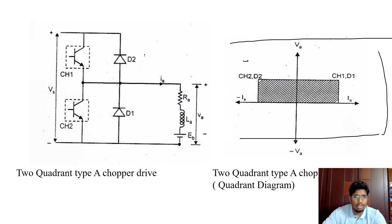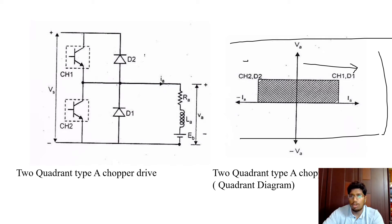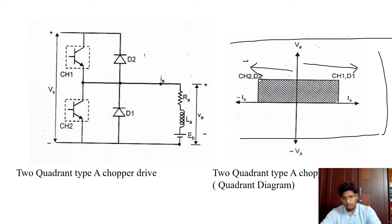By using this drive, the device is helpful in running in forward motoring mode as well as forward braking mode. This is the first type of two quadrant chopper, which is the Type A chopper.